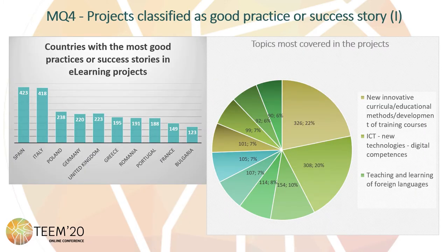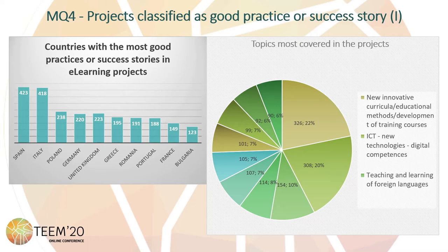The fourth mapping question is related to the projects classified as good practice or success story. Around this question, several factors have been analyzed. One of them is the number of good practices or success stories by country — Spain is the country with the most coordinators and partners involved in good practice or success story projects. The second factor analyzed is related to the most addressed topics: the first is innovation in the curricula, and the second is ICT and digital competencies, both very relevant for this study.